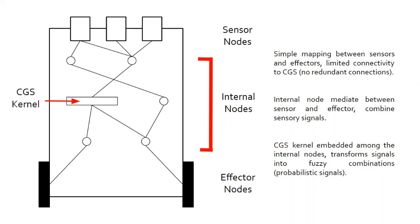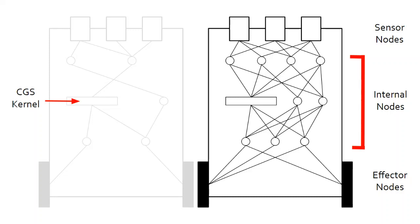This is what I was talking about when I discussed how we achieve the layering. In this case, I'm showing it as part of this internal node structure, but it could also lay on top of the agent as well. The CGS kernel is embedded amongst these internal nodes, and the CGS kernel transforms signals into fuzzy combinations, probabilistic signals. This is a more advanced or more developed version of our DBV. Again, we have the sensor nodes and the effector nodes. Those don't change, but the internal nodes change their density quite a bit.